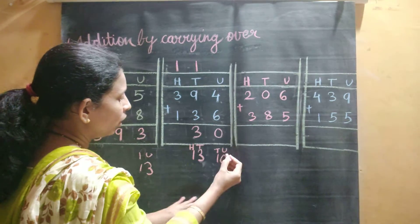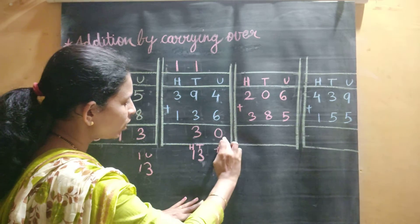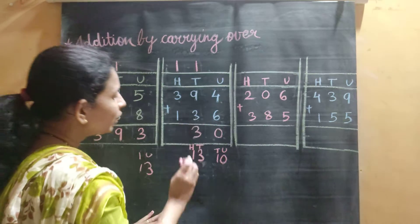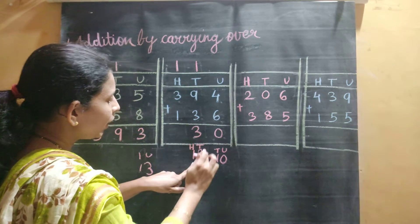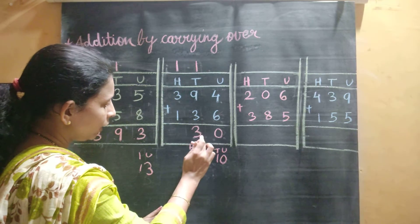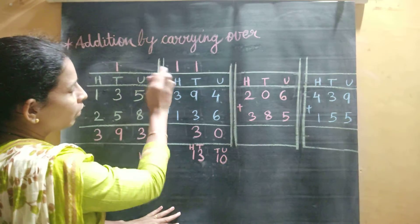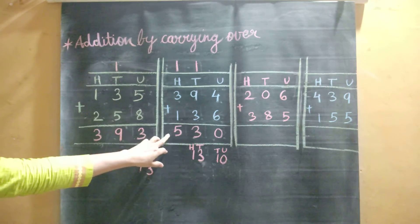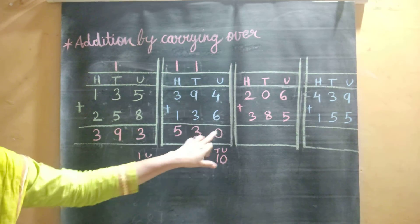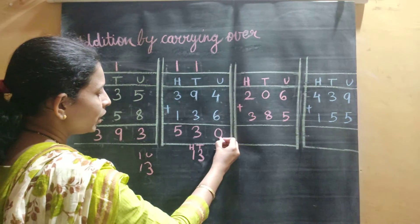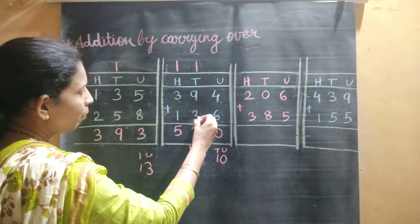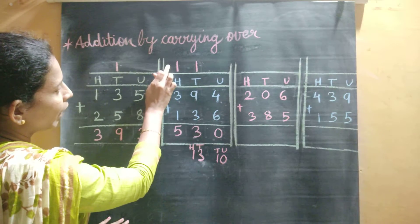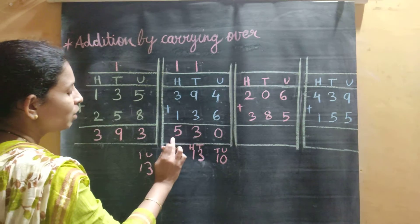Let's see again: 6 plus 4 is 10, so 10 means 0 units and 1 ten — we wrote 0 here and carried over 1 to the tens place. Then 9 plus 3 is 12, and 12 plus 1 is 13, which is again a 2-digit number. So 13 means 3 tens and 1 hundred — we write 3 at the tens place and carry 1 to the hundreds place. Now 3 plus 1 is 4, and 4 plus 1 is 5. The answer is 530.